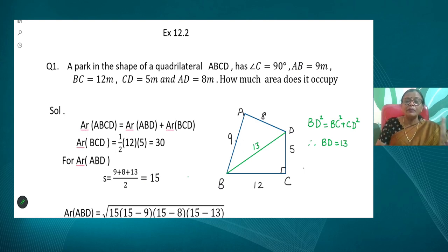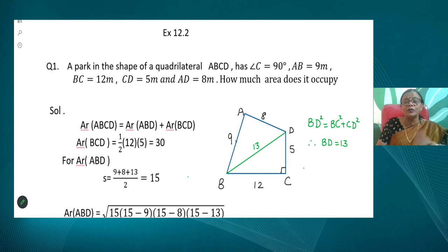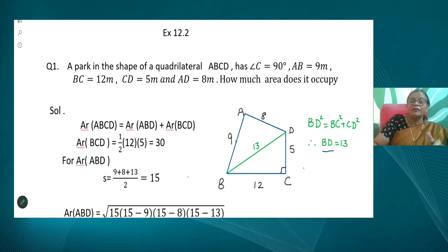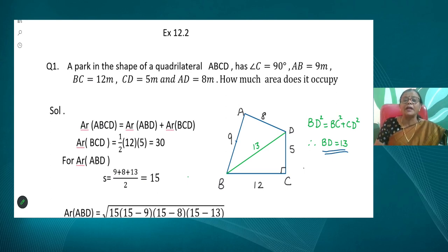We join BD because for any right-angle triangle, if two sides are known we can always get the third side using the Pythagoras theorem. The set of sides we have is 5 and 12. Every child should remember certain Pythagorean triplets so you can use those values rather than wasting time evaluating. The triplet 5, 12, 13 gives us the third side BD = 13.